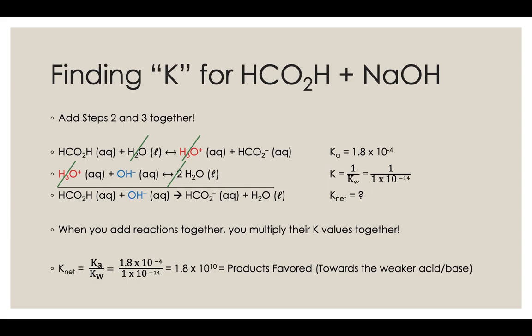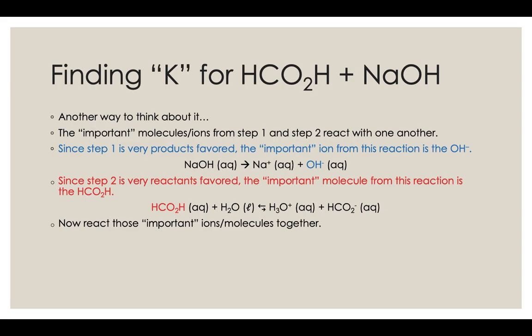But just like before, if this Hess's Law style is a little confusing to you, you can think about it this way. Think about the important molecules or ions that come from each of those steps: the reaction of our weak acid with water and with our sodium hydroxide with water. So sodium hydroxide in water, since it's a strong base, it just completely ionizes and turns into sodium ions and hydroxide ions. Sodium is going to be a spectator, so we don't really care about that guy. So the important ion in that dissolving of sodium hydroxide is the hydroxide ion.